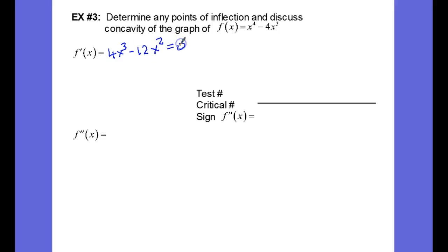We'll set this equal to 0 to solve for f prime critical values. Factoring out a 4x squared, this leaves us with x minus 3 in parentheses, and we have x equals 0 and x equals 3.